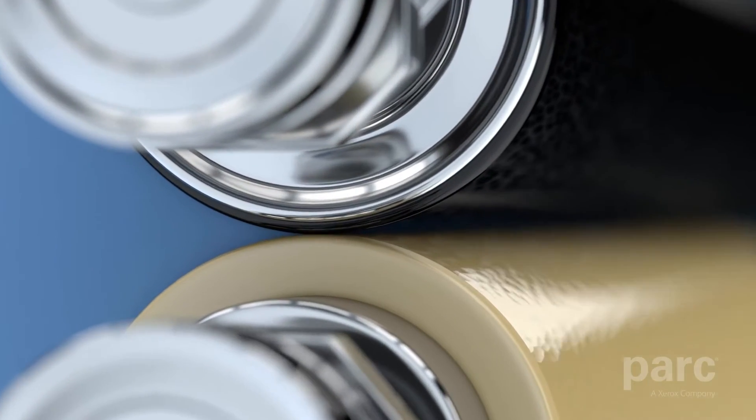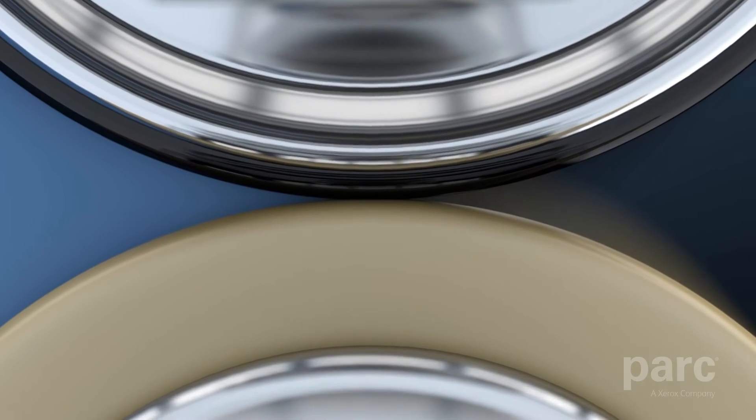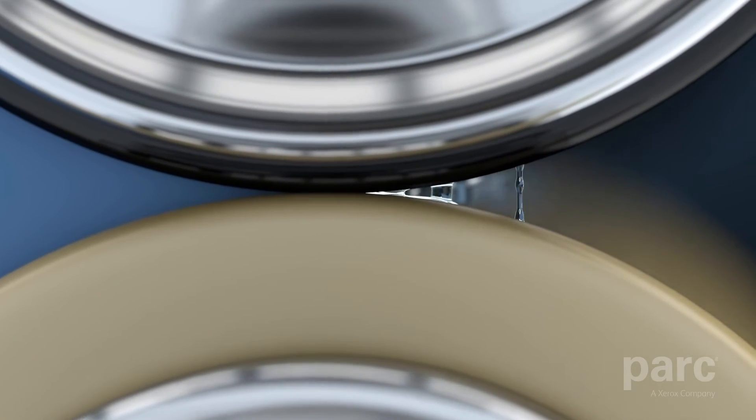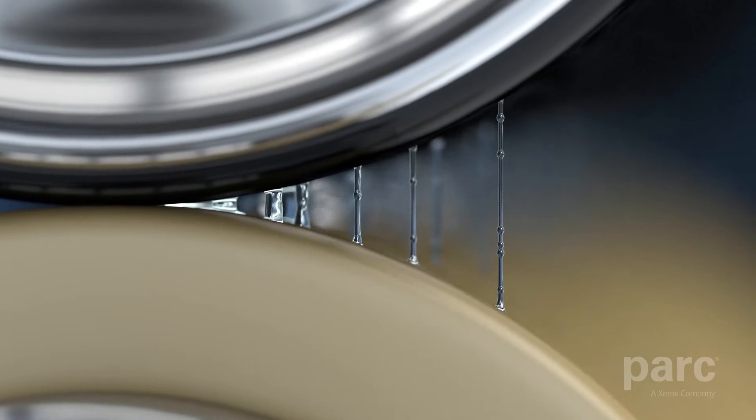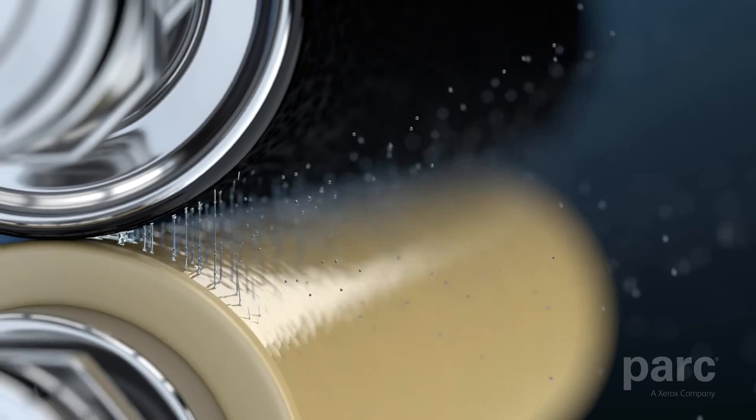This system starts with a liquid that is processed through the contact point between two rollers. As the rollers diverge, large quantities of filaments are formed. These filaments are stretched and thinned, and eventually break into droplets which are harvested and can be used for many applications.